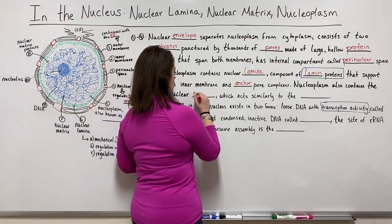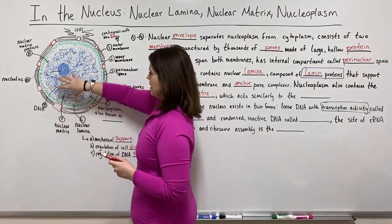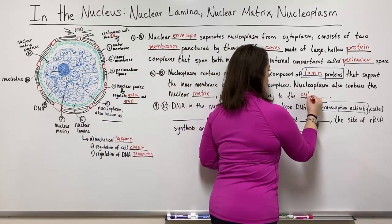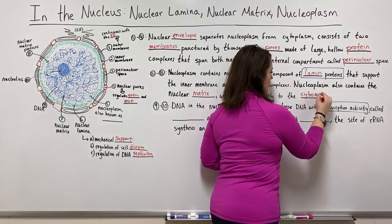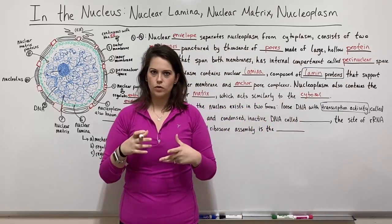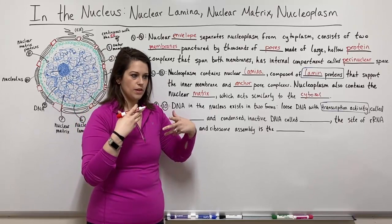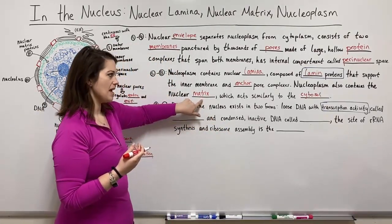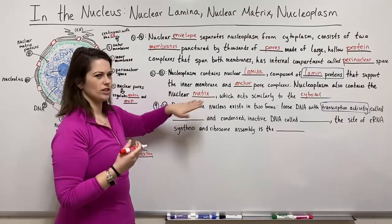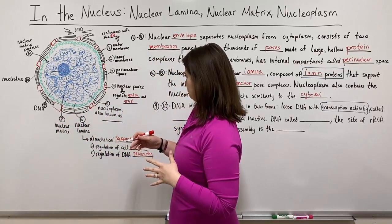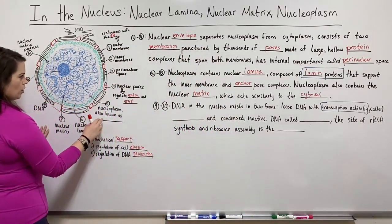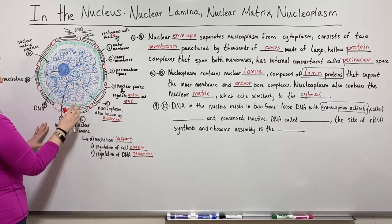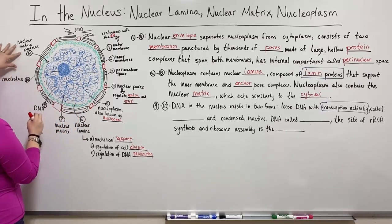The nucleoplasm also contains the nuclear matrix. The nuclear matrix is similar in function to the cytosol — the same way the cell has cytosol and the cytoplasm with all of the cytoskeleton, the nuclear matrix acts in a similar fashion. It is a lot more dynamic than the cytoplasm, and there are still many questions about exactly how it works. The nucleoplasm is also known as the nucleosol, and it is made up of the nuclear matrix and the nuclear matrix proteins.